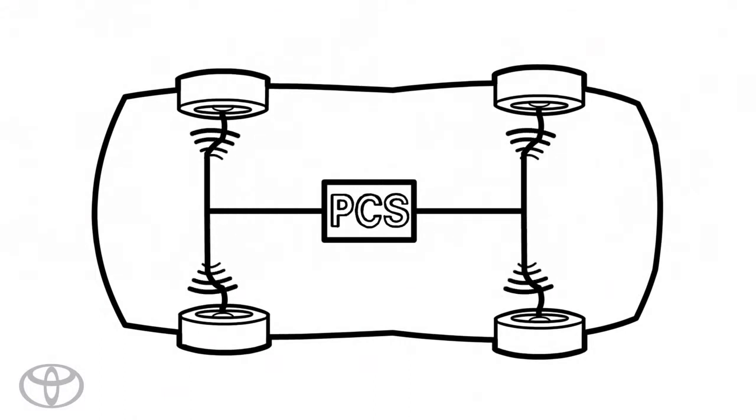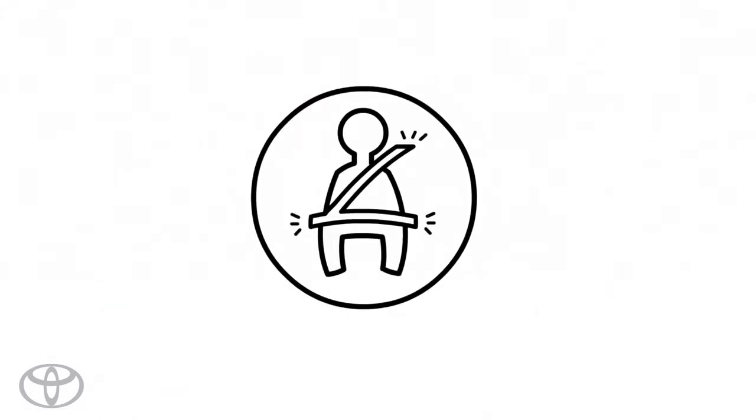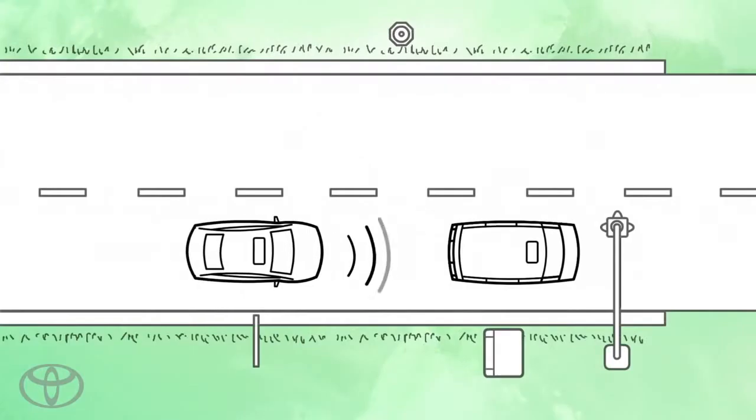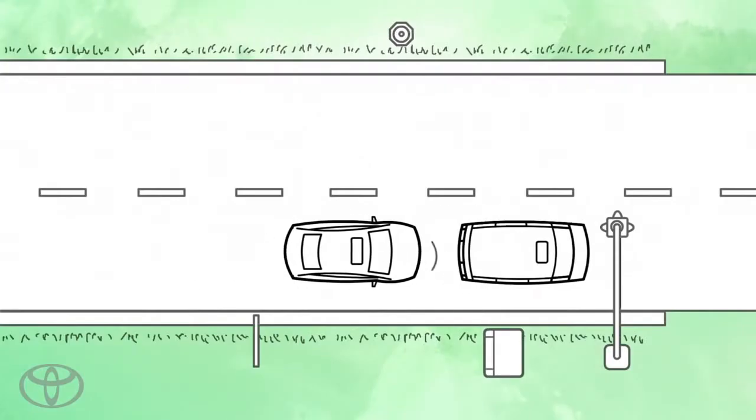The pre-collision system will even apply the brakes and automatically retract the seatbelt if it determines impact is imminent, helping to reduce the chance of damage and injury.